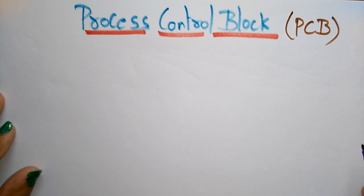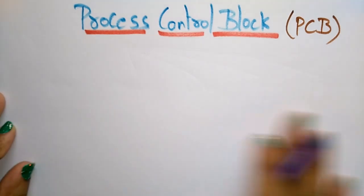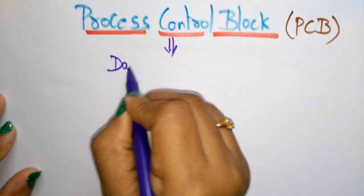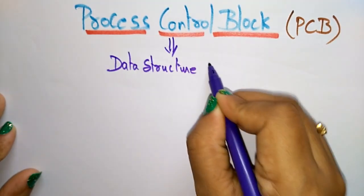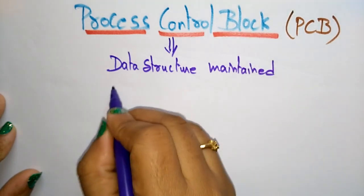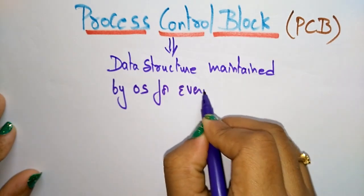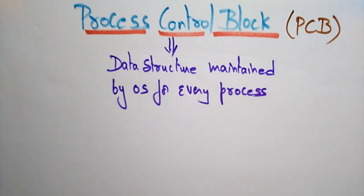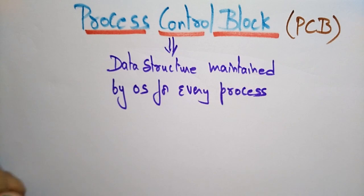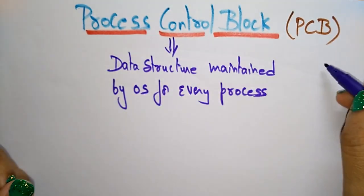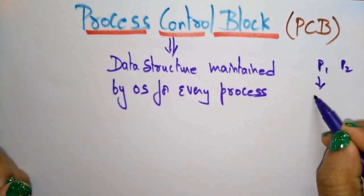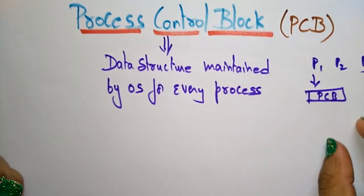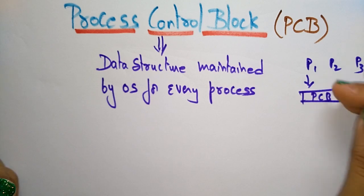This Process Control Block is a data structure maintained by the operating system for every process. A program, when it is executing in main memory, becomes a process. A process is divided into four divisions: stack, heap, text, and data. Whatever process you take, a single process is maintained in one Process Control Block. If different processes are coming — P1, P2, P3 — each will be maintained in some Process Control Block with the information of that process.